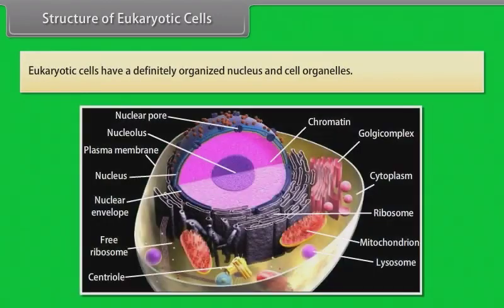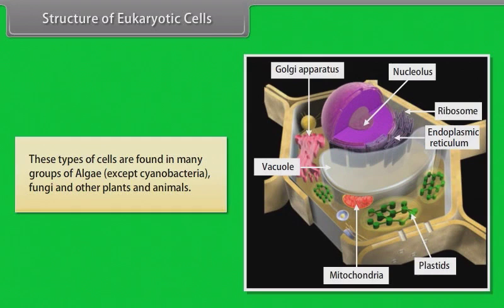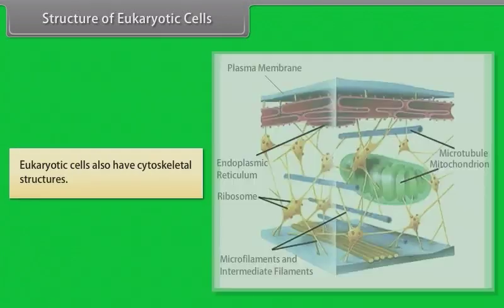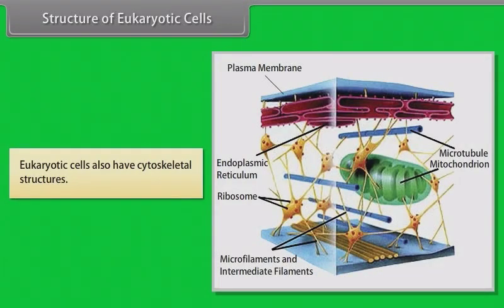Structure of eukaryotic cells: Eukaryotic cells have a definitely organized nucleus and cell organelles. These types of cells are found in many groups of algae, except cyanobacteria, fungi, and other plants and animals. A typical eukaryotic cell consists of a cell membrane, nucleus and cytoplasm. Genetic material is organized in the form of chromosomes, and eukaryotic cells also have cytoskeletal structures.